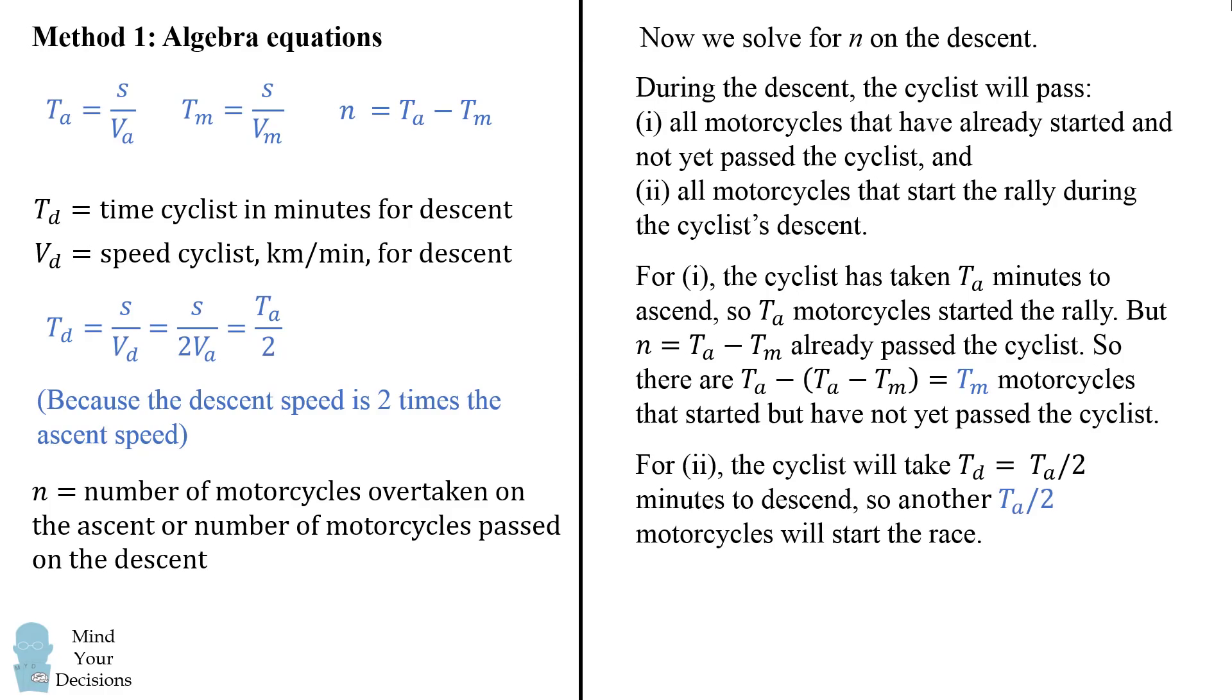So it will take the cyclist td, which equals ta over 2 minutes to descend. So exactly another ta over 2 motorcycles will start the race because a motorcycle starts the race every single minute. So we add up these two cases to get n is equal to tm plus ta over 2.